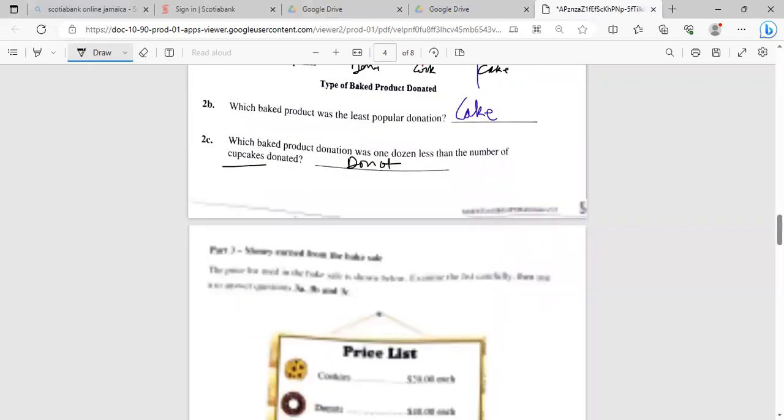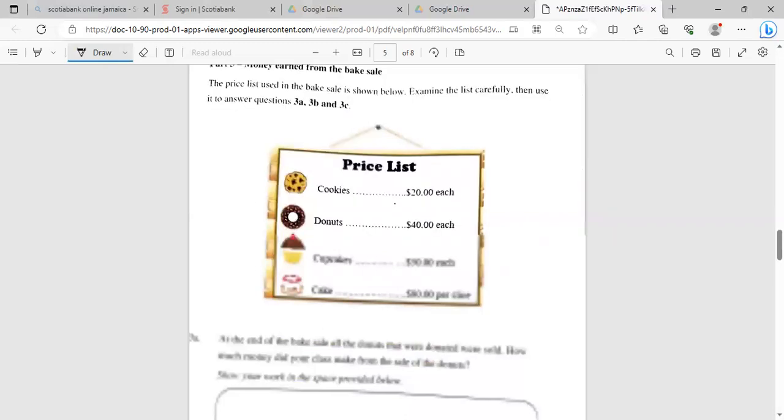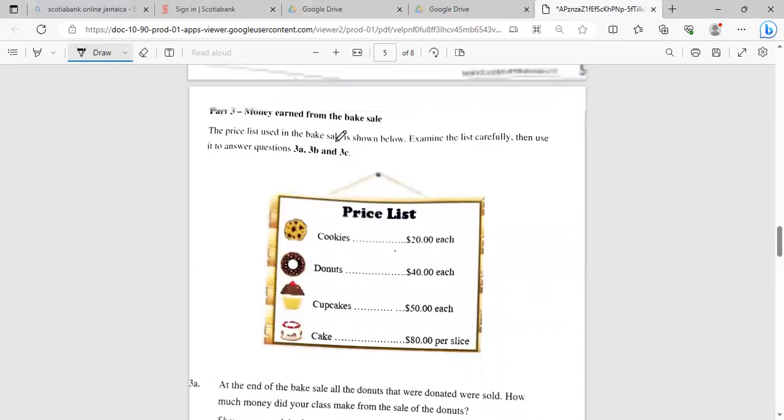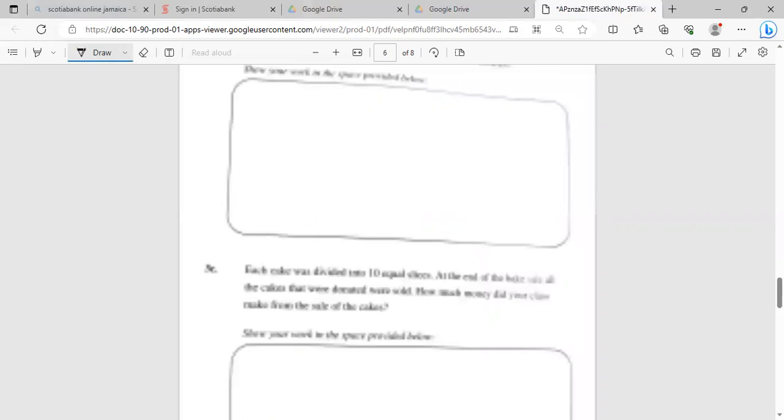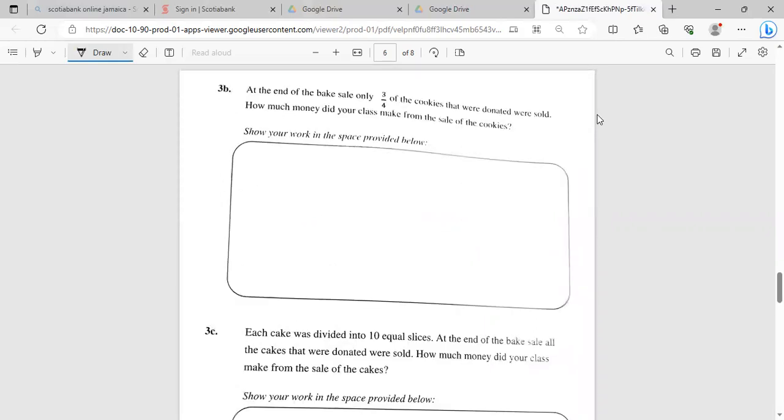All right, so far so good. It further went on and says the price list for the bake sale is shown below. Examine the list then answer questions 3a, 3b, and 3c. Cookies $20 each, donuts $4 each, cupcakes $50 each, and cake $80 per slice.